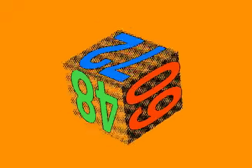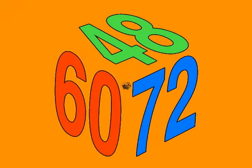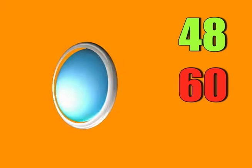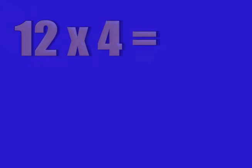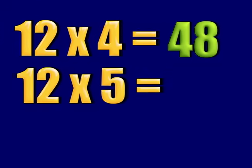48, 60, 72. 48, 60, 72. Another 12 times tables trick for you: 12 times 4 is 48, 12 times 5 is 60, 12 times 6 is 72.